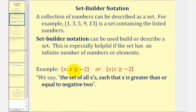We read these as the set of all x's such that x is greater than or equal to negative 2. Notice in the second case, we've replaced a colon with a vertical bar. These are the two most common ways to represent set builder notation, and these two are equivalent.